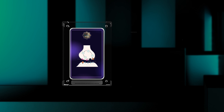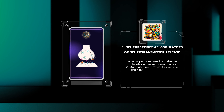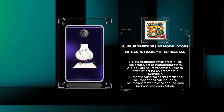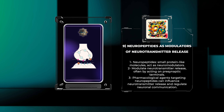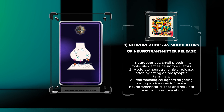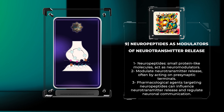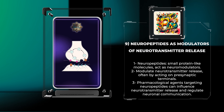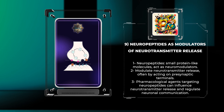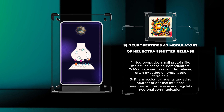Neuropeptides are small protein-like molecules that act as neuromodulators within the nervous system. These molecules can modulate neurotransmitter release, often by acting on presynaptic terminals. Pharmacological agents that target neuropeptides can influence neurotransmitter release and contribute to the regulation of neuronal communication.